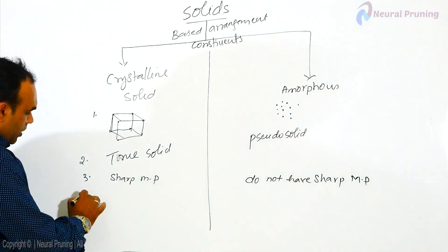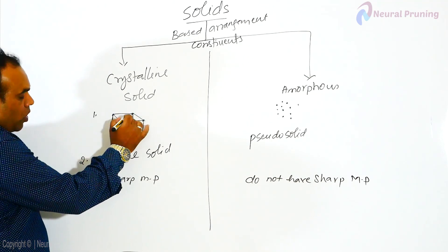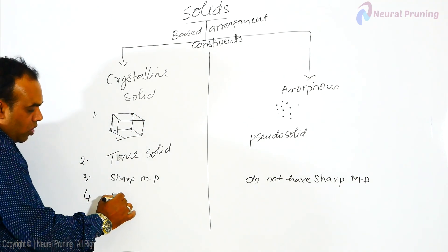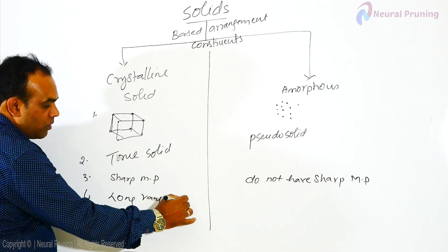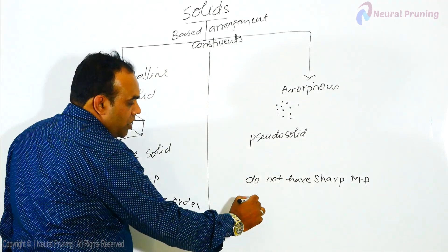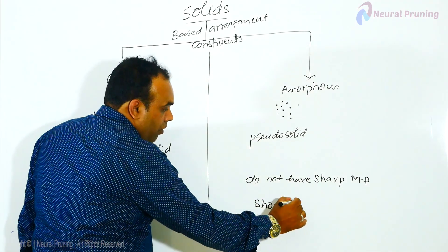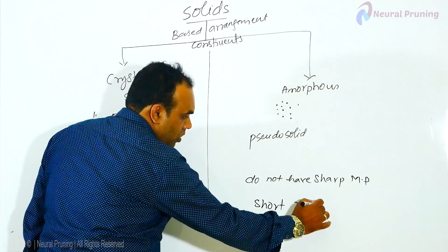Crystalline solids, if you see, the constituent particles have long range order, whereas amorphous have short range order.